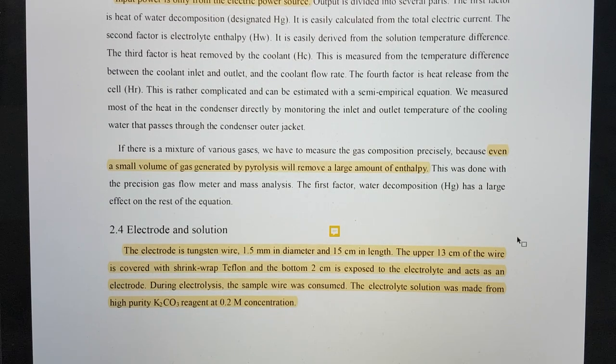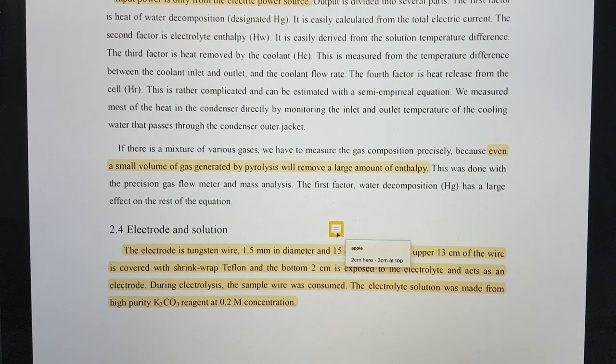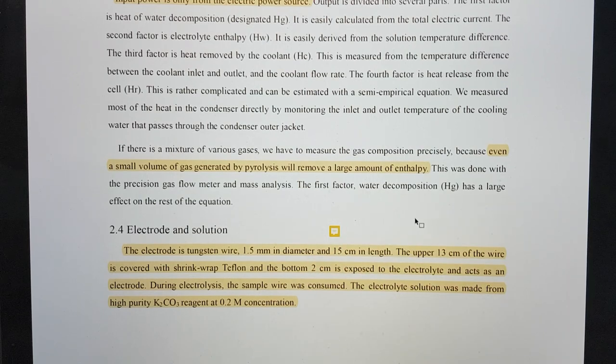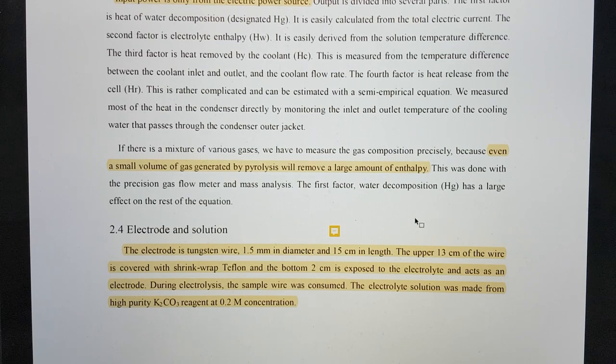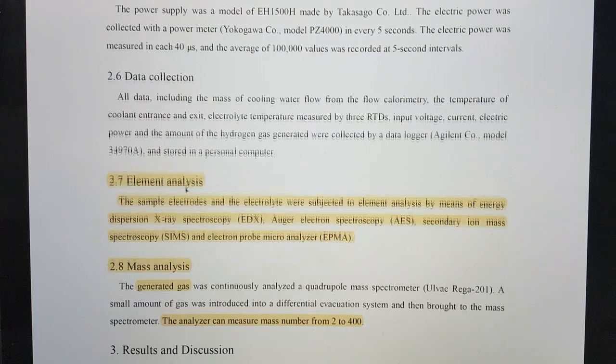The electrode is a tungsten wire, 1.5 millimeters in diameter and 15 centimeters in length. The upper 13 centimeters is covered with shrink wrap Teflon and the bottom 2 centimeters is exposed. There's a note here because at the top it says 3 centimeters exposed and here it says 2 centimeters exposed. During electrolysis, the sample wire was consumed. The electrolyte solution was made from high purity potassium carbonate reagent at 0.2 molar concentration.